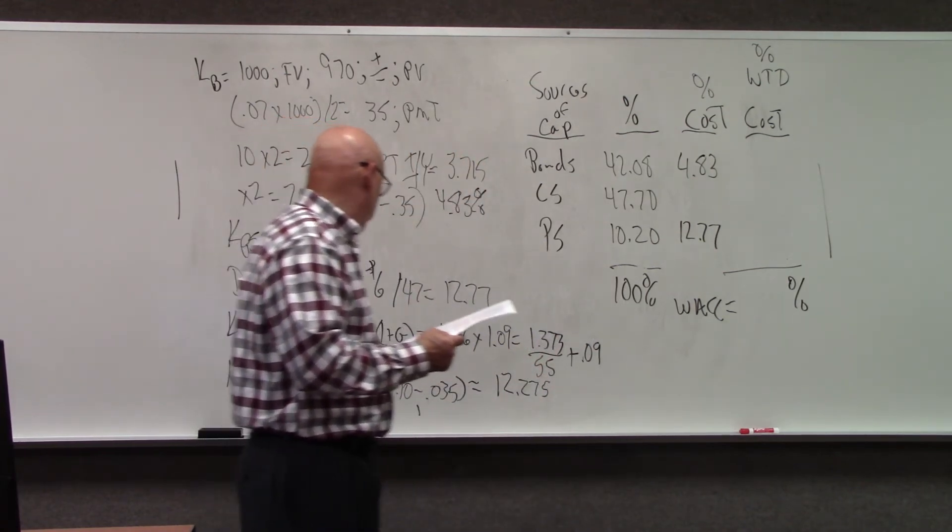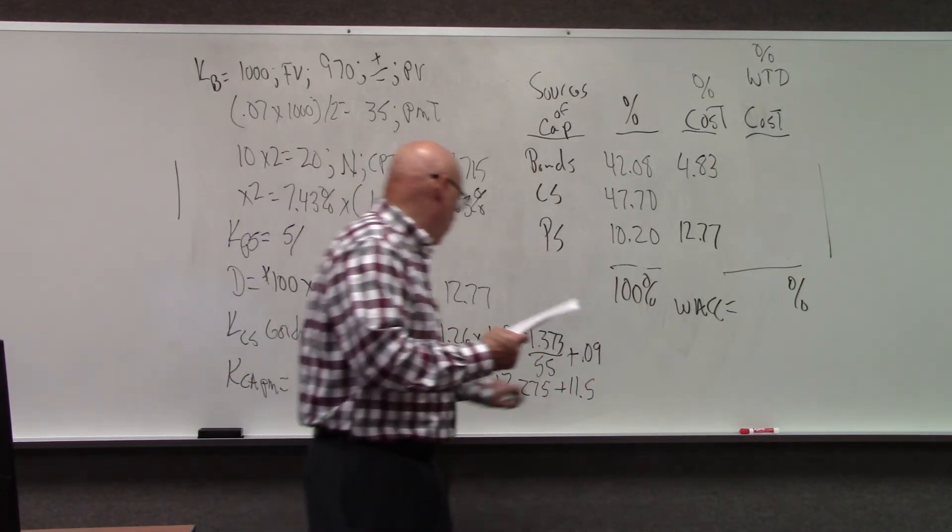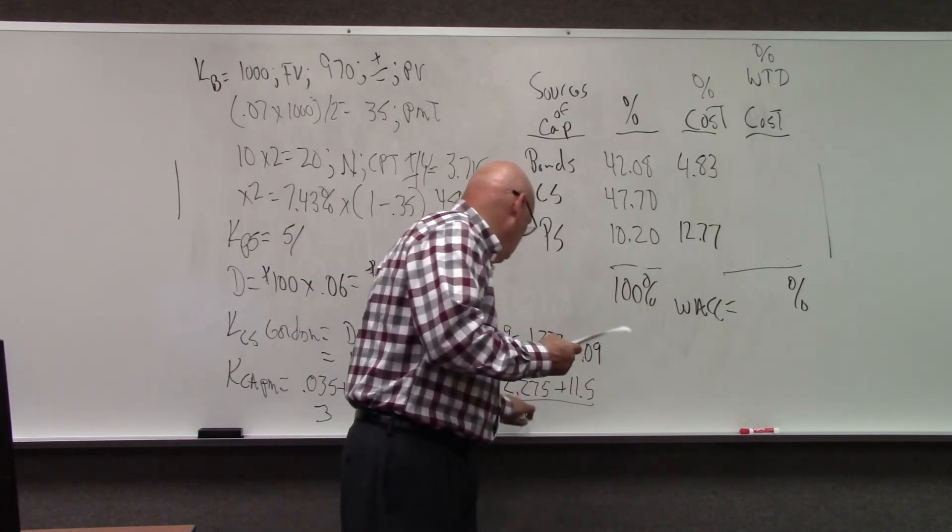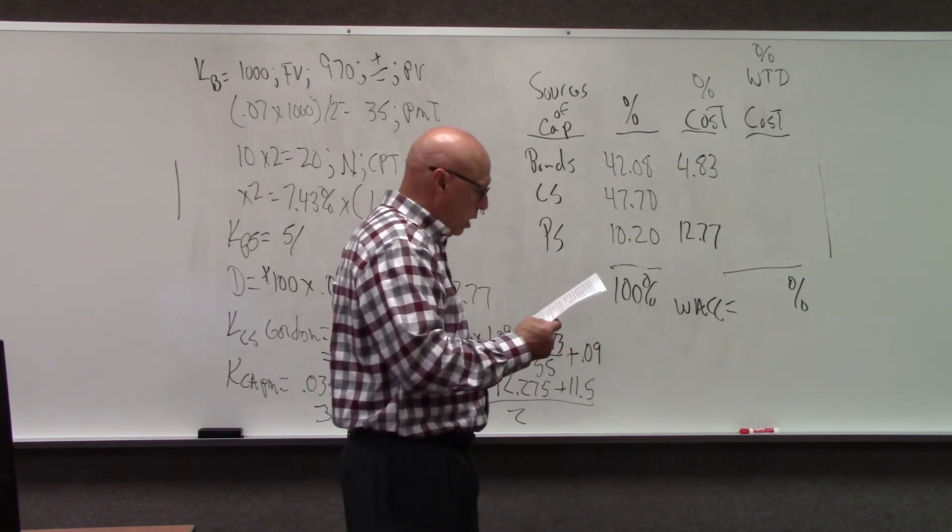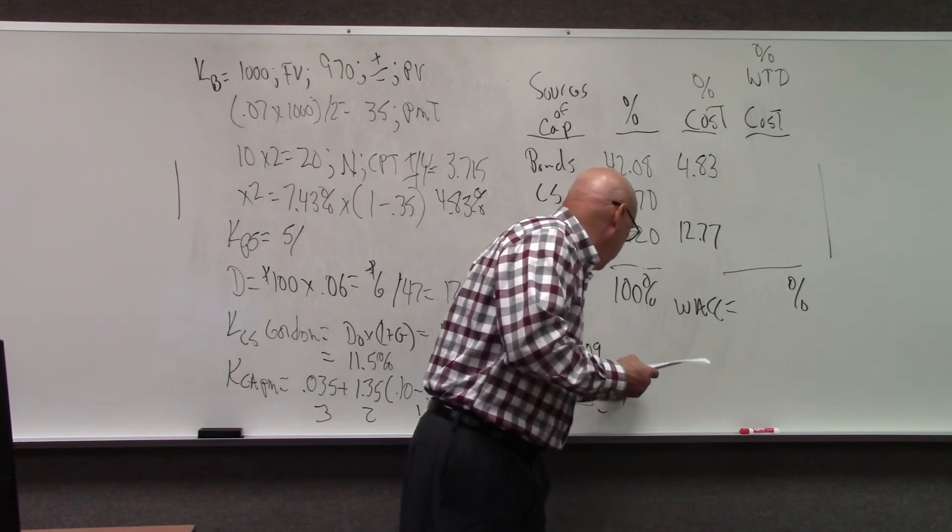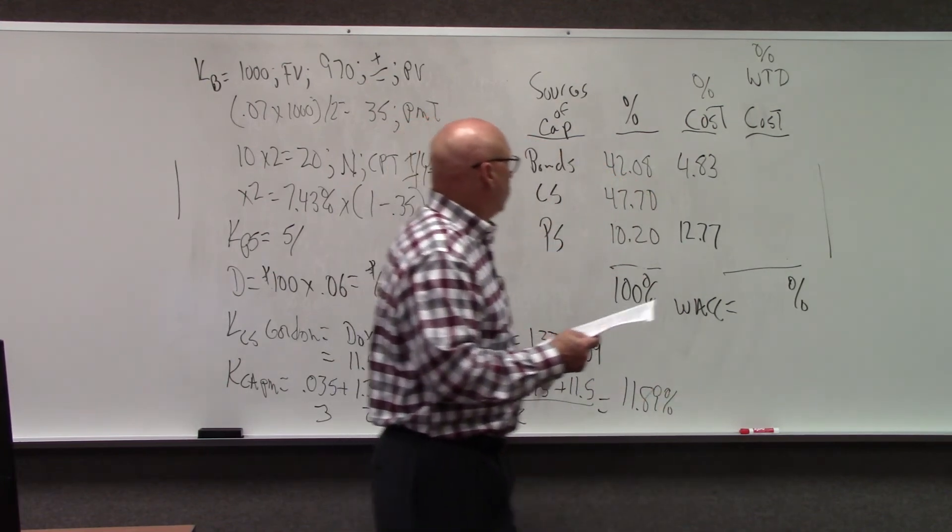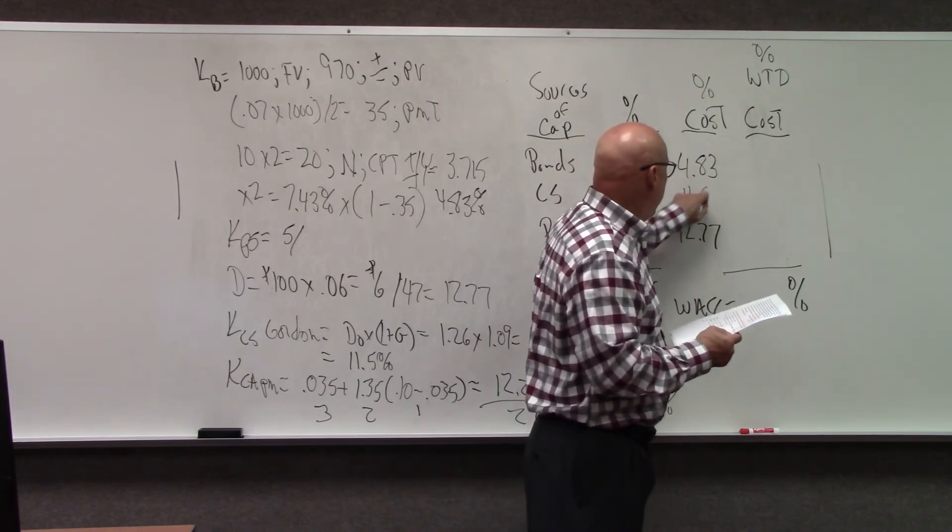We're going to add that to the 11.5% that we got using the Gordon model and divide that by 2, and we come up with 11.89%.